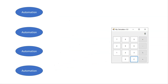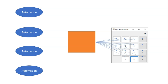UiPath thought: we want to do something about that. We want to build something in the middle — a place where you can put the description of all of these user interface elements that you use in your applications. Your automations would then, instead of talking directly to the application, talk to this middle layer. And that middle layer is called Object Repository. The good thing about it is it's really simple to use, and once you get used to it, you don't want to go back.